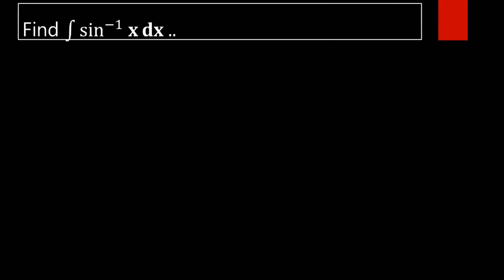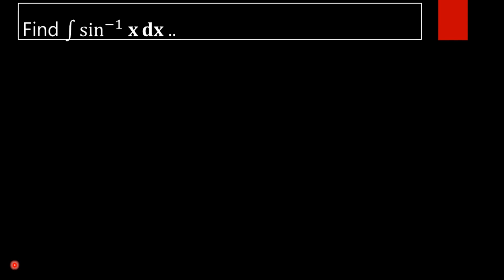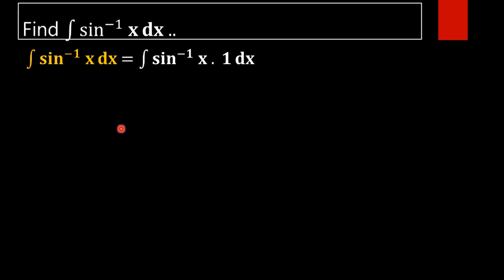We have to find the value of the integral of sin inverse x dx. For that we are going to use the integration by parts method. To apply integration by parts, we need a u function and a v function. We are taking sin inverse x as u and 1 as our v.